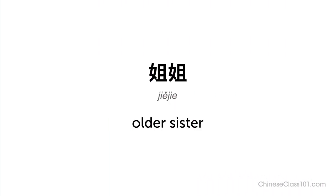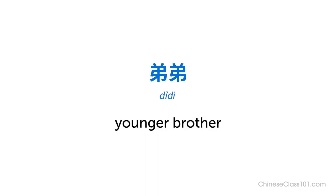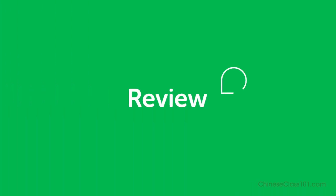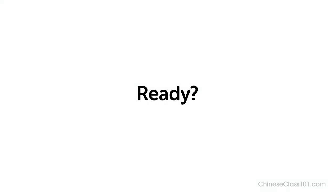Let's review the key vocabulary. 姐姐 — Older sister. 弟弟 — Younger brother. Let's review. Respond to the prompts by speaking aloud, then repeat after me, focusing on pronunciation. Ready?